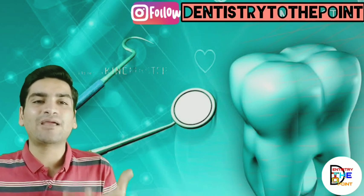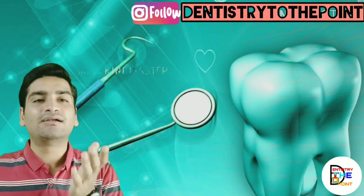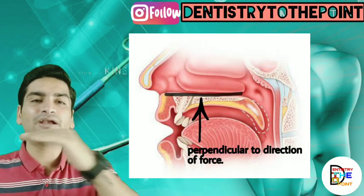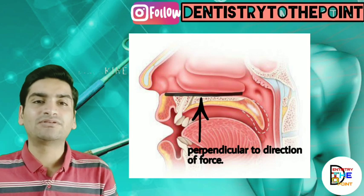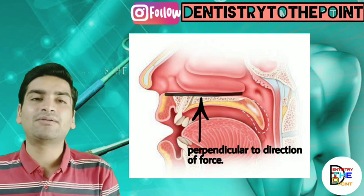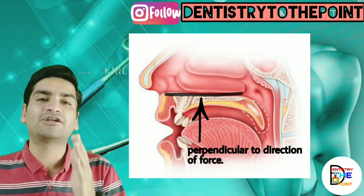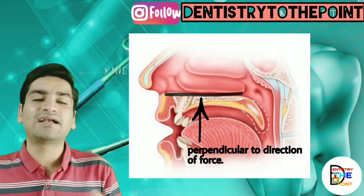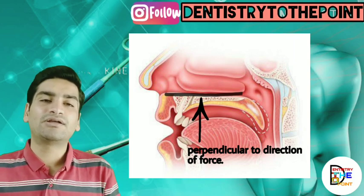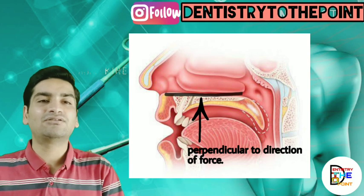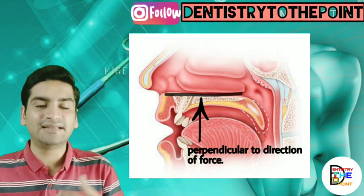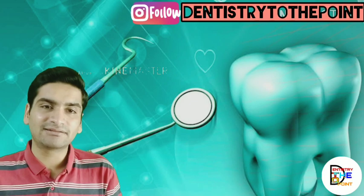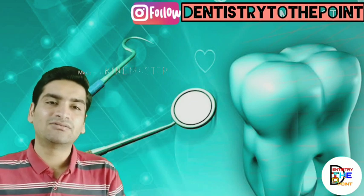Why does the hard palate act as a primary supporting area? Because the trabecular pattern, or the bony pattern, in the hard palate is perpendicular to the direction of forces. A trabecular pattern perpendicular to the direction of forces means it can easily withstand the masticatory forces acting on the bone. That is why the hard palate acts as a primary supporting area.